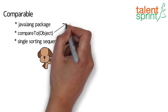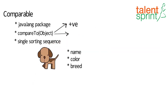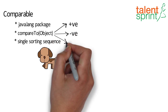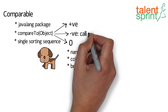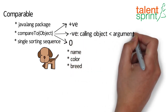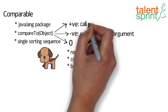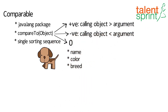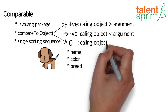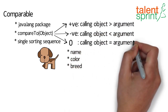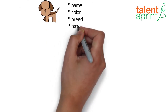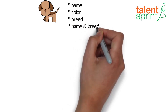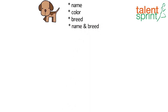The compareTo method works by returning an integer value that is either positive, negative, or zero. A negative number means the object making the call is less than the argument. A positive number means it is greater than the argument. Zero implies both objects are equal. Now suppose we want to sort dogs by their names and breed also.